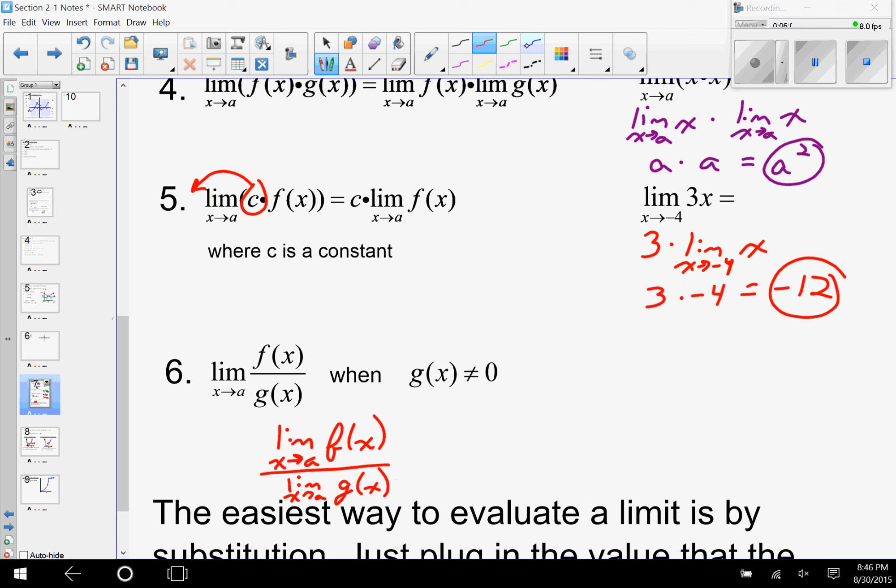And the reason this doesn't get used very often is this part right here: we have to make sure that the bottom cannot be zero. And it's not just when at a, it's at any time that's close to g(a).